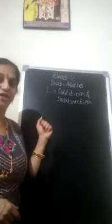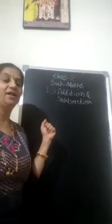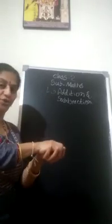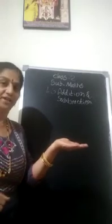For example, you have one chocolate in your hand. Okay, your mummy gave you two chocolates. So, one chocolate and two chocolates, it becomes more. Correct?